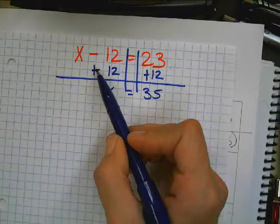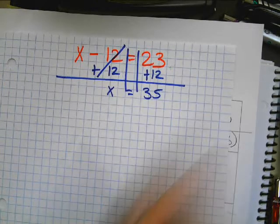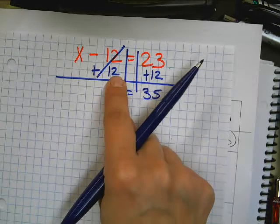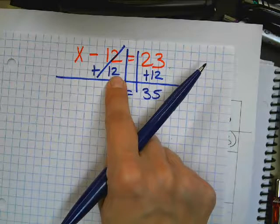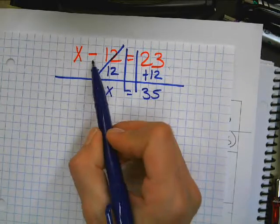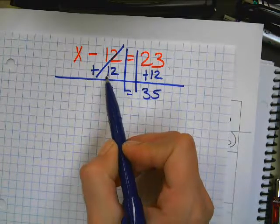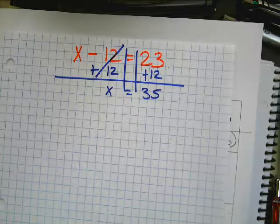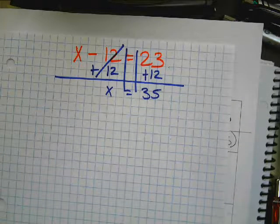The reason you do the opposite is to cancel it out. So, basically, this cancels out. You're left with X. If you don't do the opposite, you're not canceling it out. Because minus 12 plus 12 is 0. So, what we're doing is we're not writing the plus 0. It's eliminated. You're done with it.